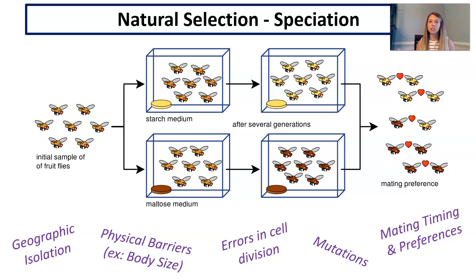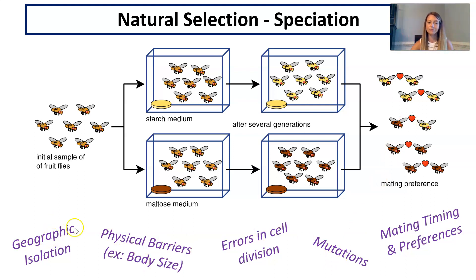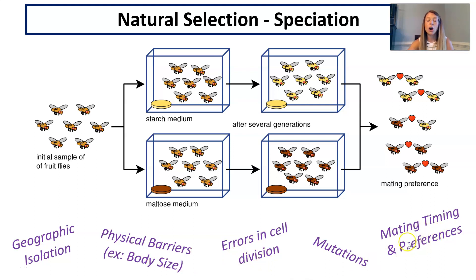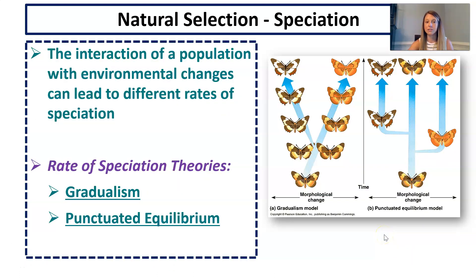How does speciation happen in real life? Several things can lead to speciation: geographic isolation — populations getting separated from one another — physical barriers, body size, errors in cell division, mutations, mating timing, and mating preferences. All of these things can cause changes to occur to the point that a new species develops.